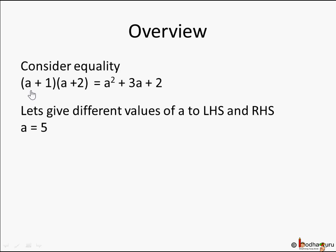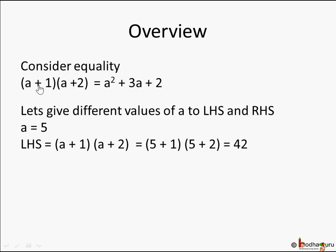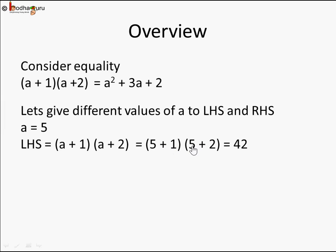Let's take a = 5. Put it in the left hand side: (a + 1)(a + 2). Replacing a by 5, it becomes (5 + 1)(5 + 2). You can take any value like 3 or 2 — give it a try. So 5 + 1 is 6, 5 + 2 is 7, and 6 × 7 is 42.